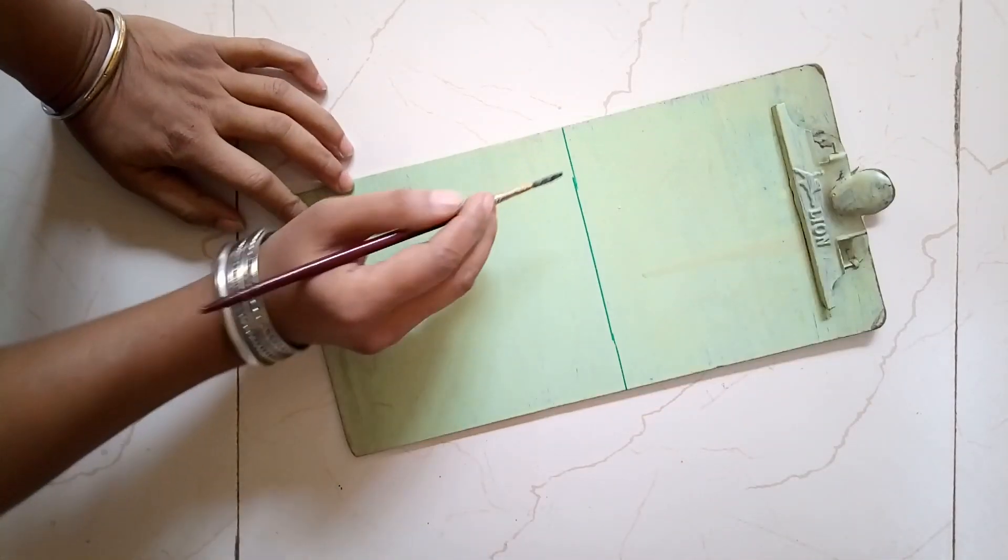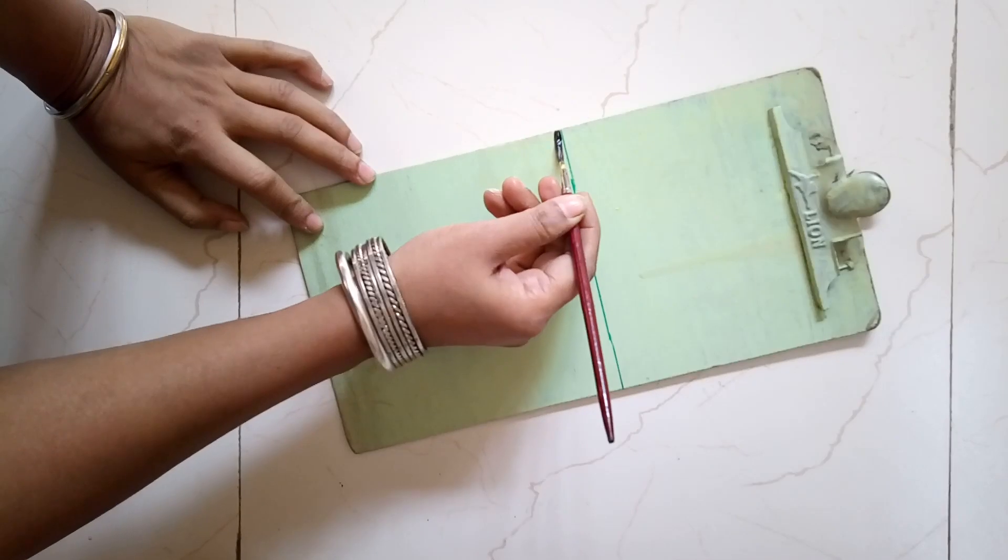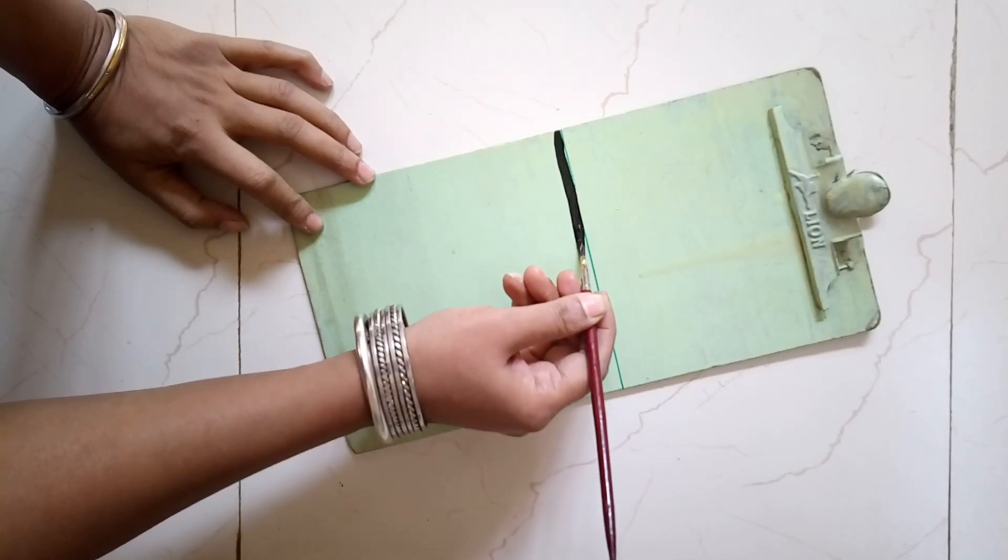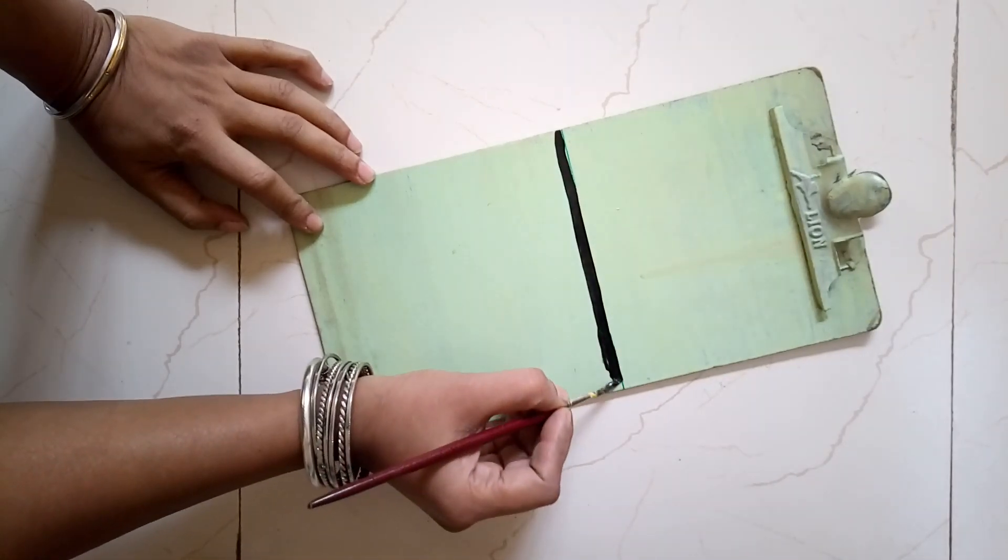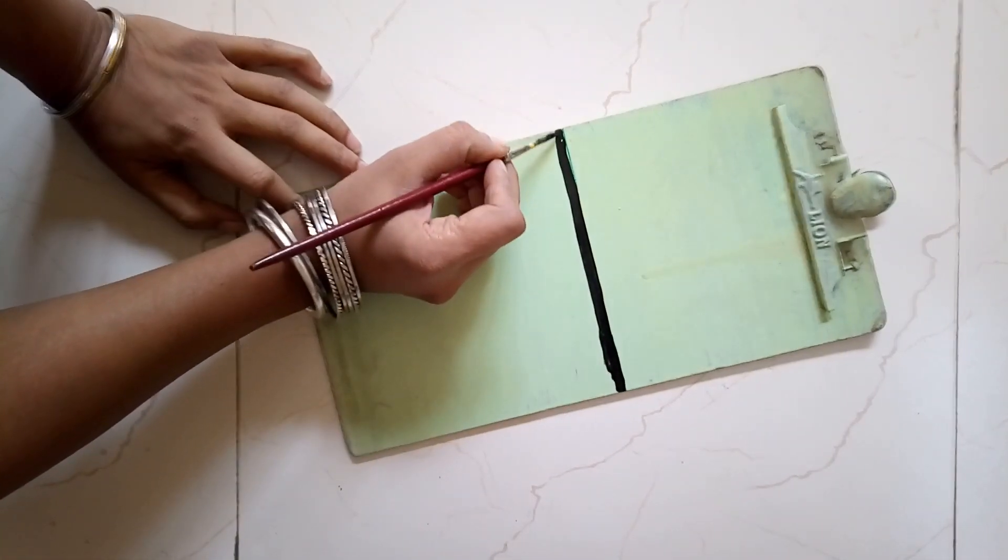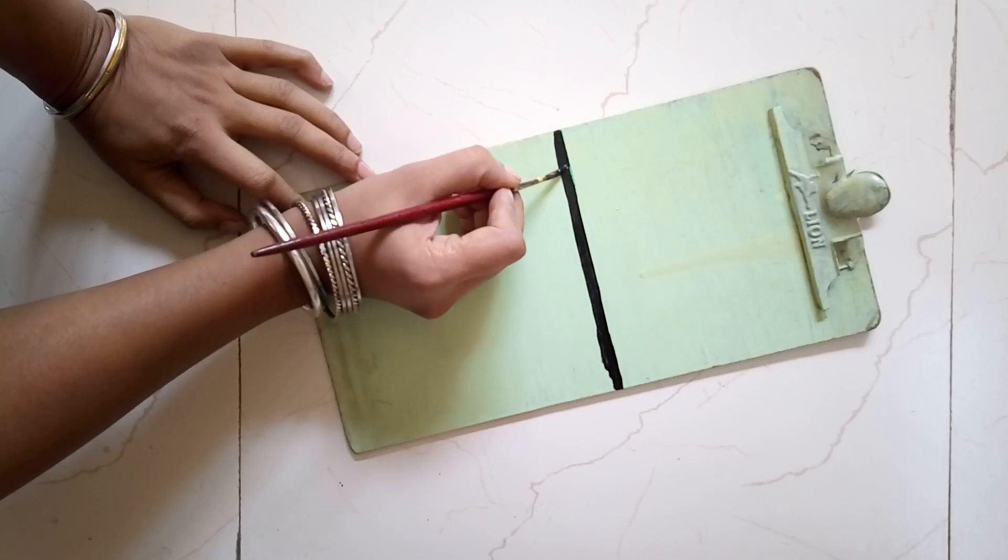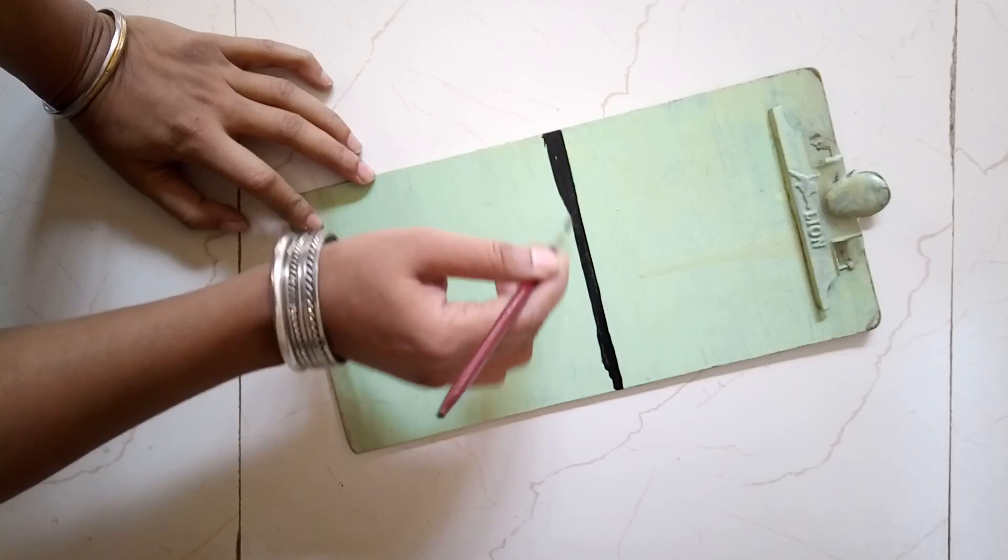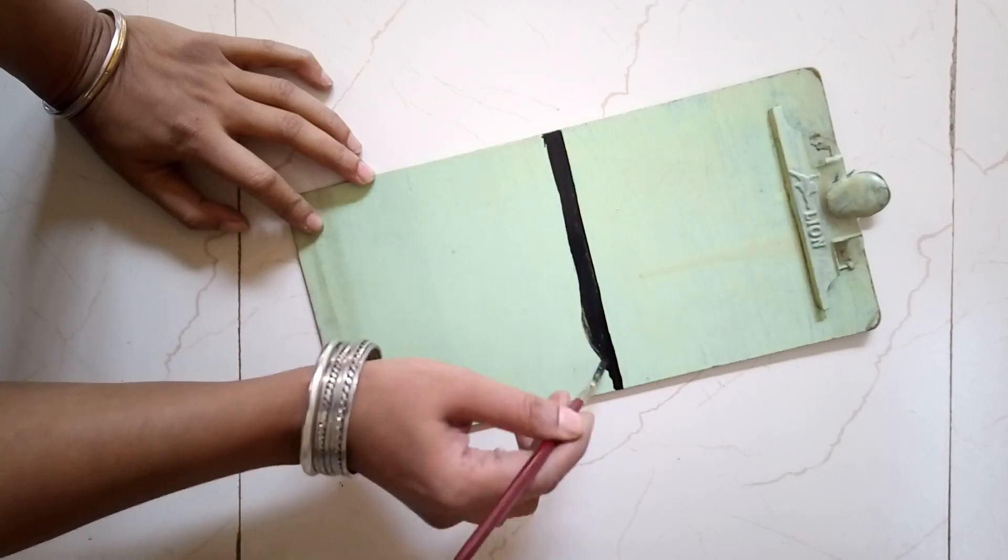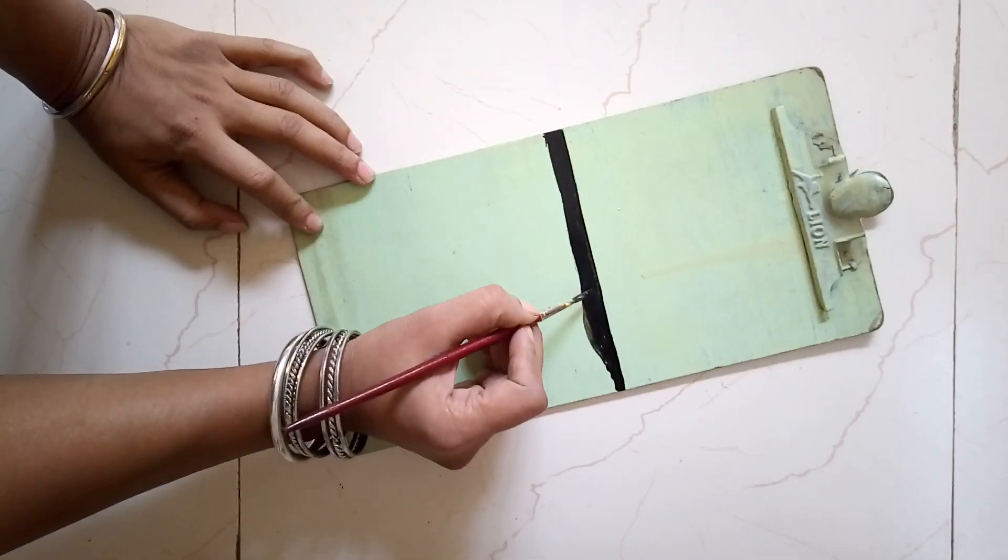So I started off by painting the bottom portion black. Always the outline first and then move in. I'm using acrylic color for this.